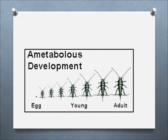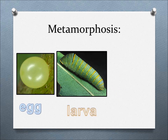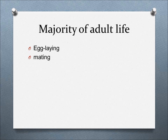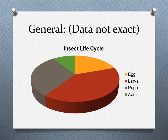Regardless of what metamorphosis an insect goes through, they all start from an egg and turn into a larva. Eventually, they all turn into adults, or imagoes or imagines. As imagines, the insects live the rest of their life mating and egg-laying. The life of an insect varies depending on their species, but once they become adults, most die soon after.